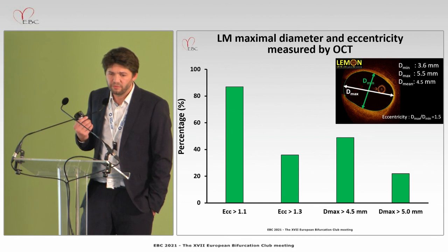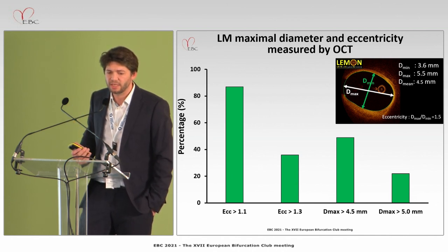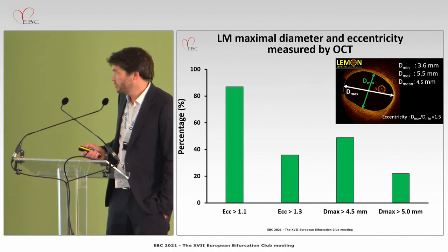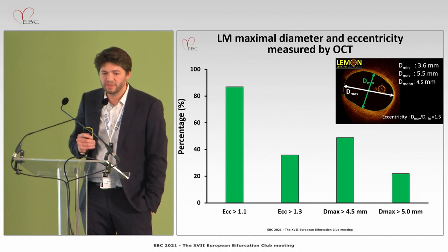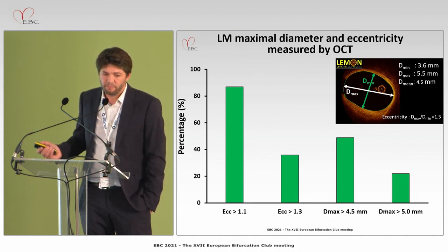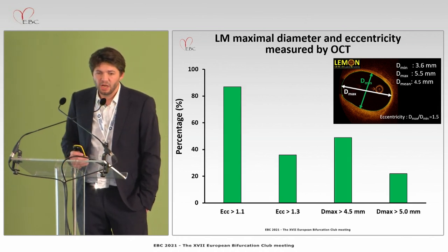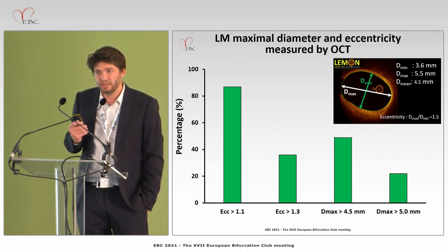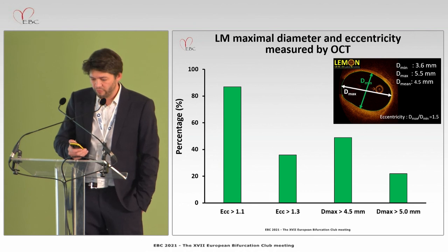When we look with OCT — intracoronary imaging — you observe that it's not only non-cylindric but also quite eccentric. These are data from Lehmann, to be presented tomorrow, in which we measured the ratio between the minimal and maximal diameter at different points of the left main. We observed that around 35% of patients displayed marked eccentricity, involving a higher risk of malapposition and requiring a stent that can be overexpanded to correctly cover the vessel.